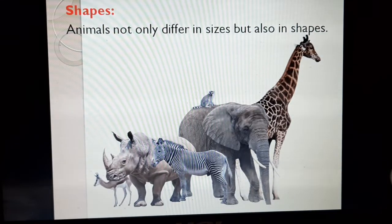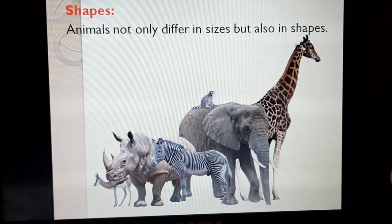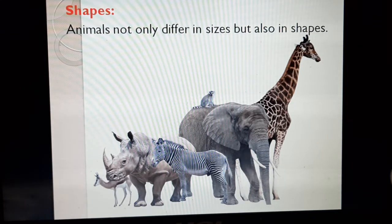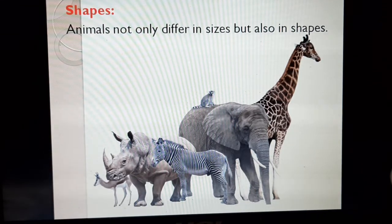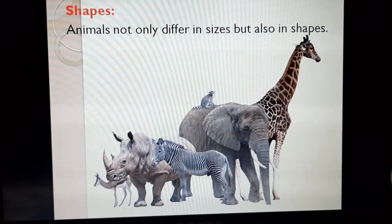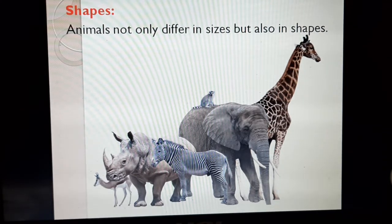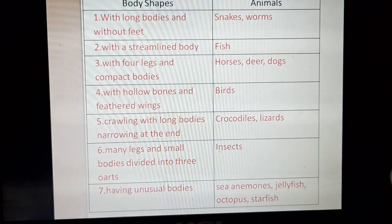Animals not only differ in size but also in shape. The shape of a giraffe is different from that of an elephant, and the shape of a rhinoceros is different from any bird. So animals differ in both size and shape.